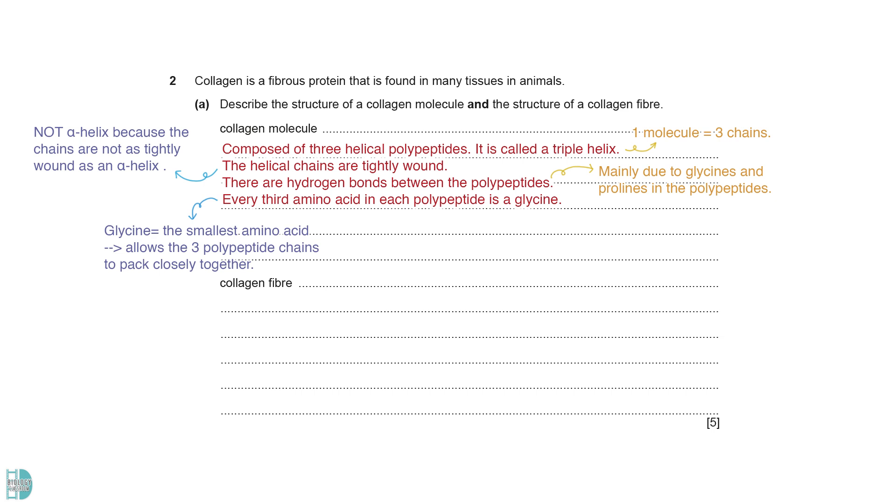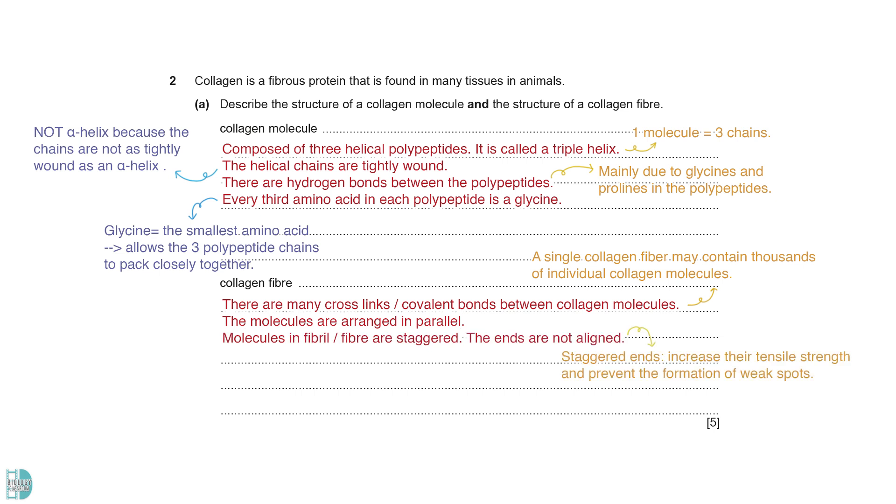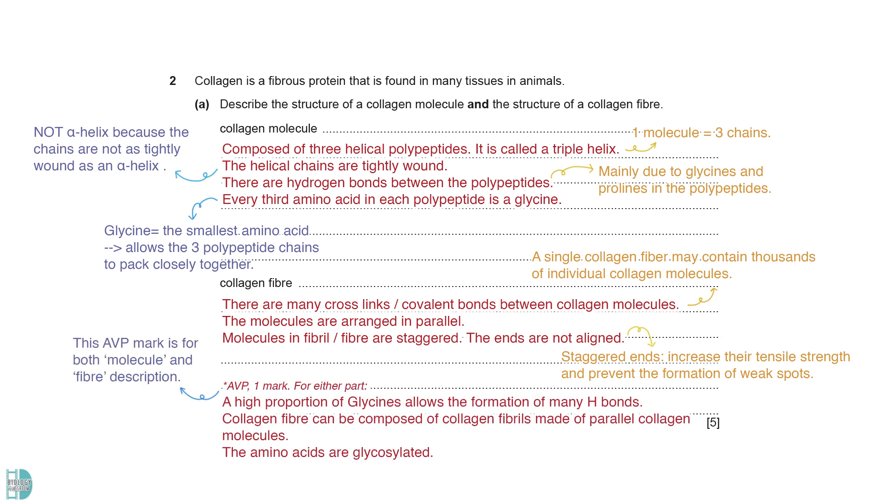A single collagen fiber may contain thousands of individual collagen molecules. They are cross-links or covalent bonds between the molecules. The molecules are arranged in parallel. They show staggered ends. This means the ends are not aligned. Staggered ends increase their tensile strength and prevent the formation of weak spots. There is a mark for AVP. You can discuss the importance of glycine in collagen and the arrangement of collagen molecules into fibrils before forming the fibers.